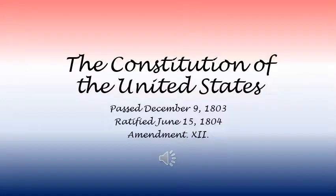Amendment 12. The electors shall meet in their respective states, and vote by ballot for President and Vice-President, one of whom, at least, shall not be an inhabitant of the same State with themselves. They shall name in their ballots the person voted for as President, and in distinct ballots the person voted for as Vice-President, and they shall make distinct lists of all persons voted for as President, and of all persons voted for as Vice-President, and of the number of votes for each, which lists they shall sign and certify, and transmit sealed to the seat of the Government of the United States, directed to the President of the Senate.